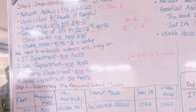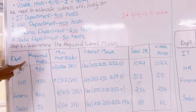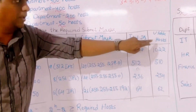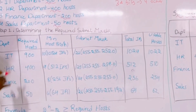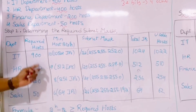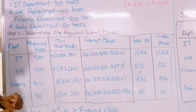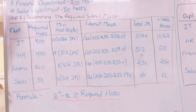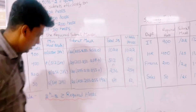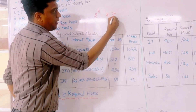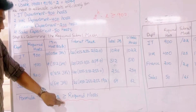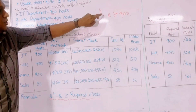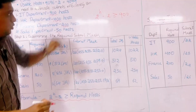Now we plan the required subnet mask for all departments by constructing a table with columns: department, required host, minimum host bit, subnet masking, total IPs, and usable host. From this we identify the minimum host bit, denoted by h, using the formula: 2^h − 2 ≥ required host. For IT, the required host is 900, so we solve 2^h − 2 ≥ 900.